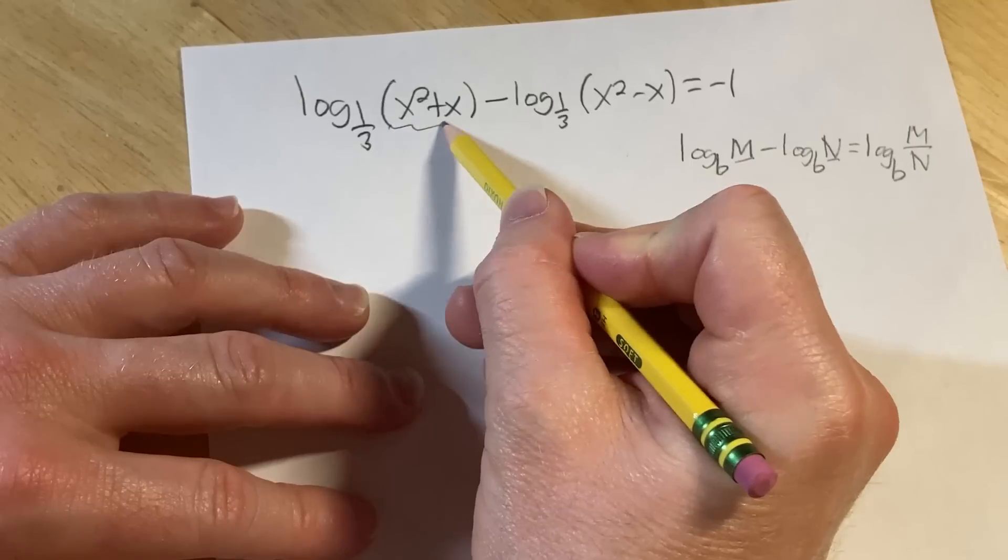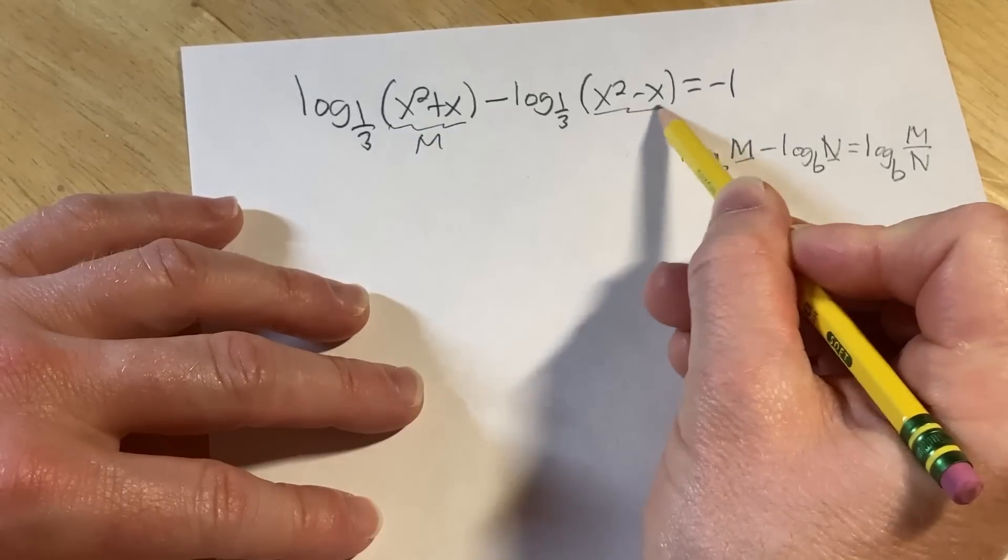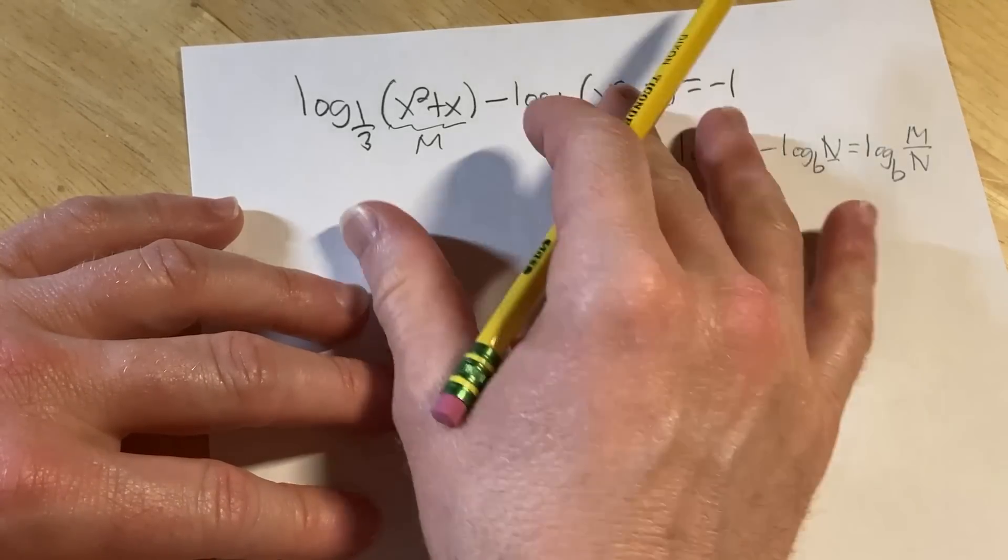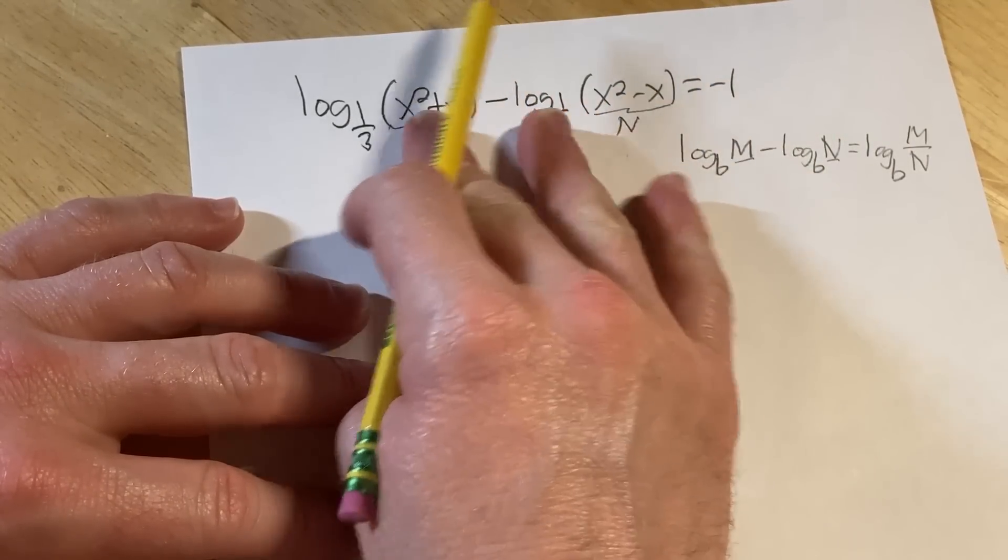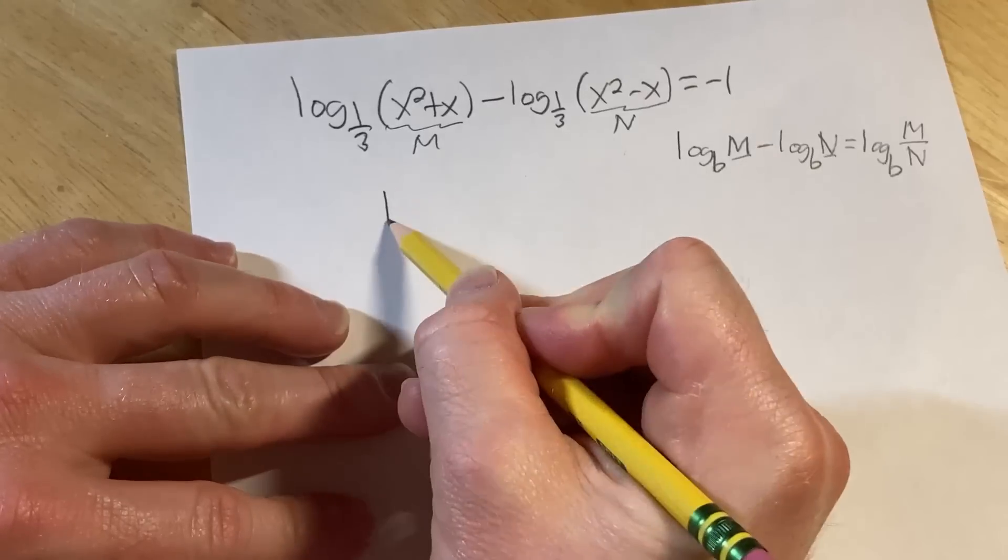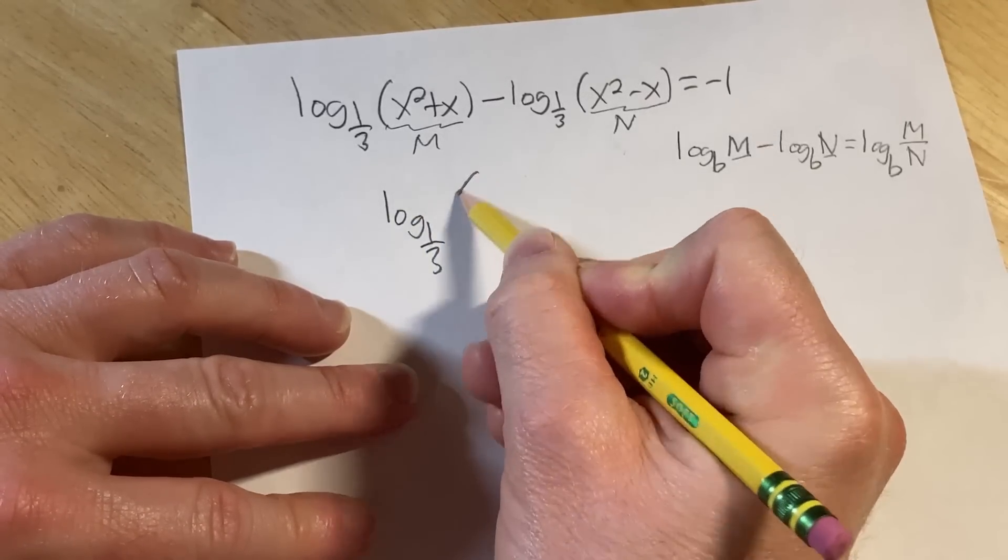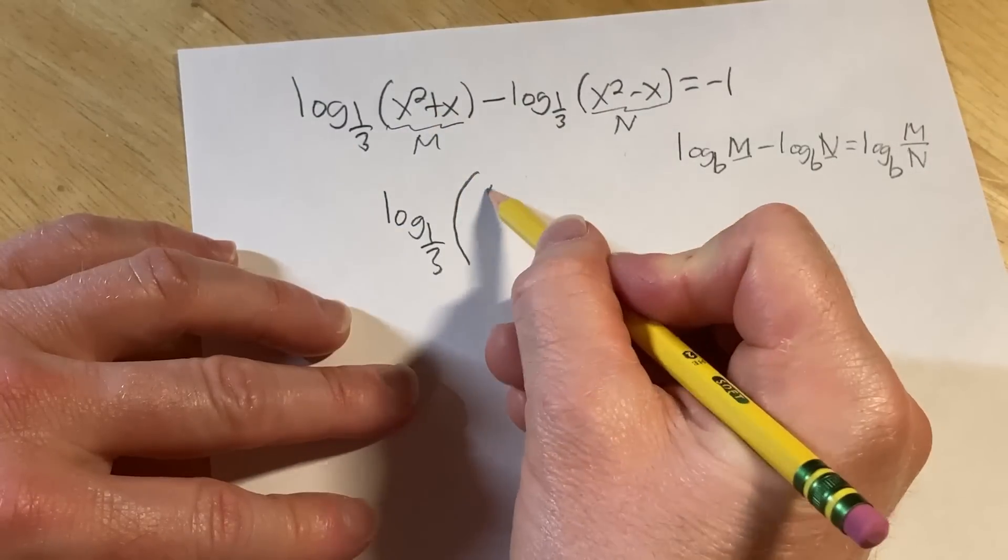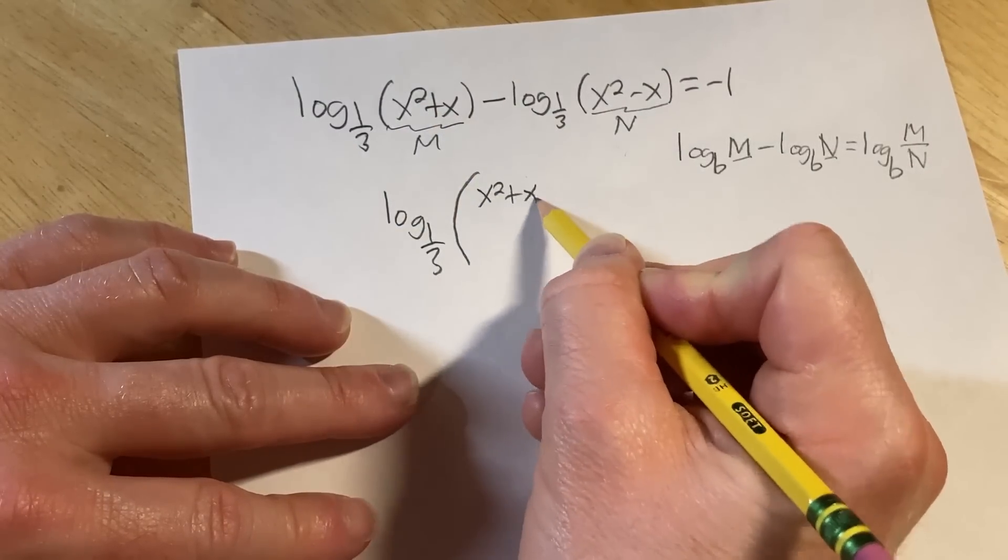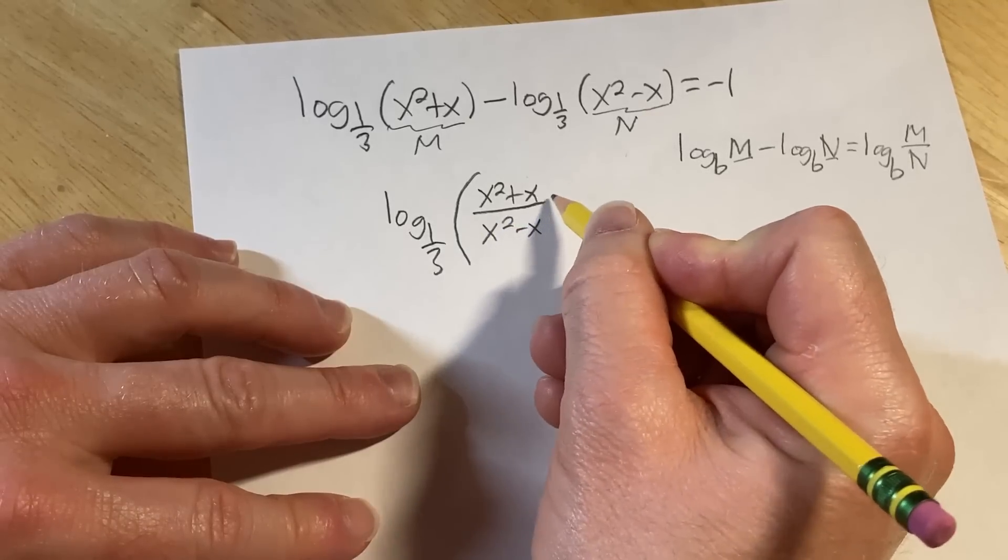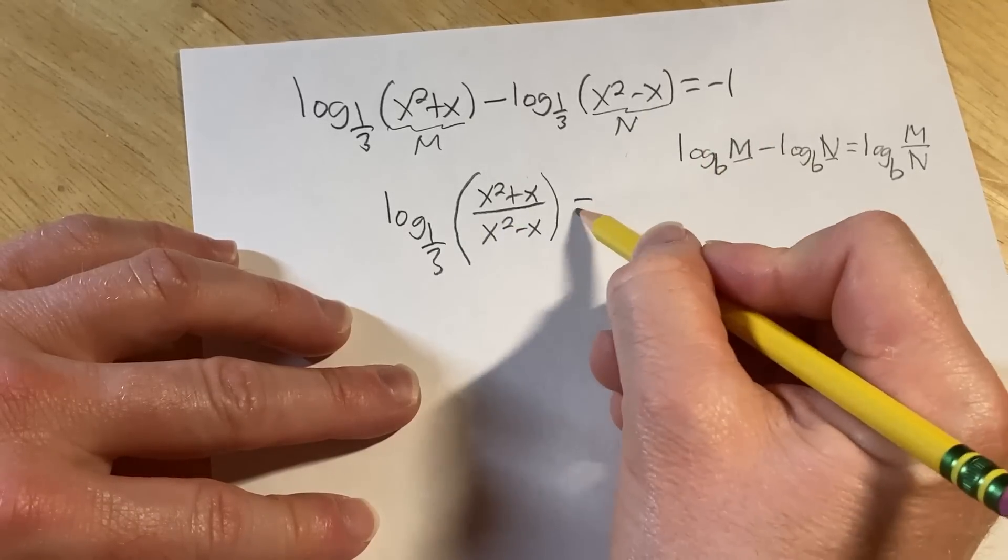So in our particular case, this is our m and this is our n. So in the very first step, we're just going to take this equation and combine it, these two terms, and combine it into one term. So this is log base one-third of m, so the first piece, x squared plus x, over x squared minus x, and that's equal to negative one.